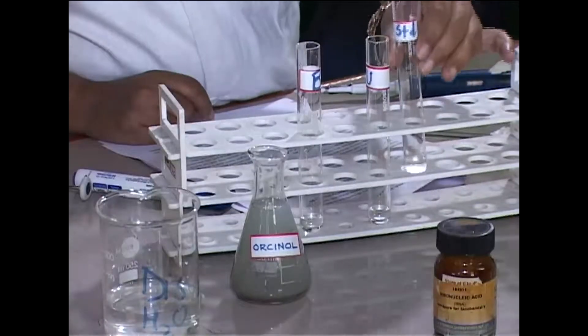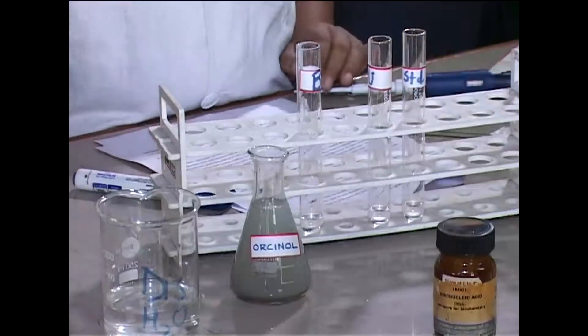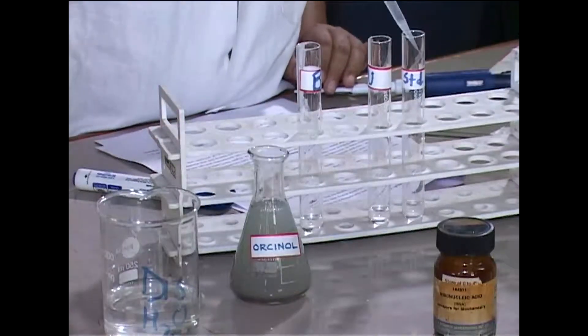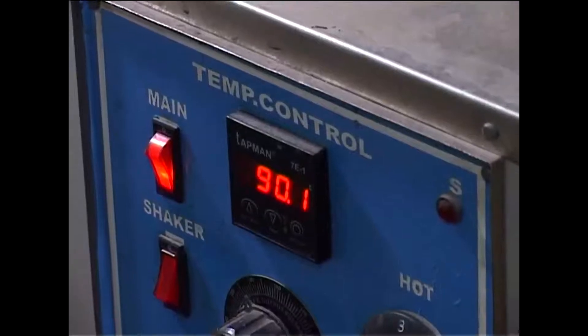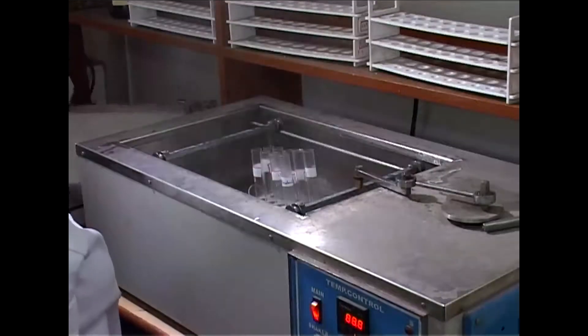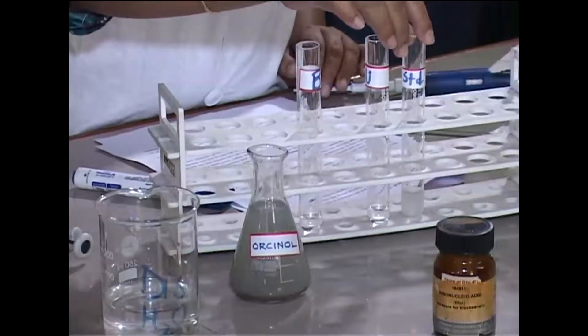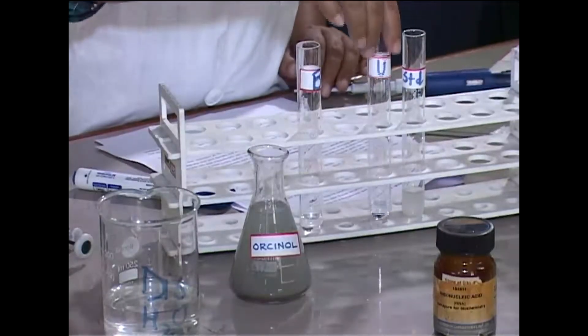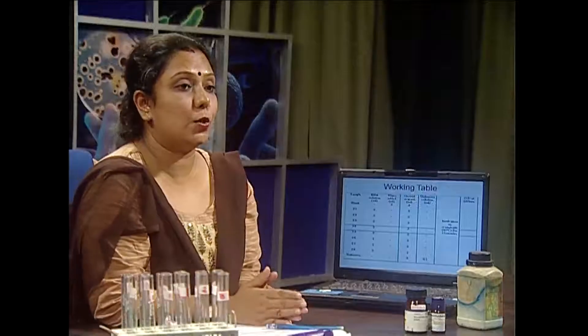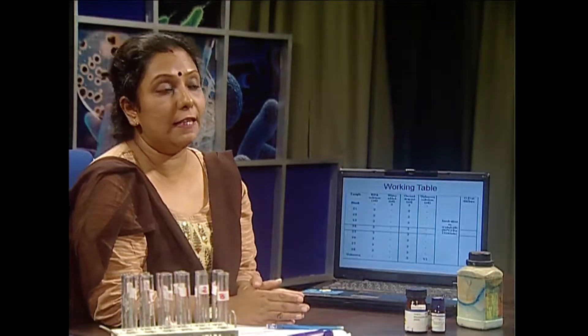Following the working table: take 2 mL of RNA solution along with 2 mL of Orcinol solution, and keep them at 90 degrees centigrade for 15 minutes. Along with the standard and your unknown, you have to take one reagent blank where you add water instead of RNA. That will help to eliminate background noise produced by Orcinol.